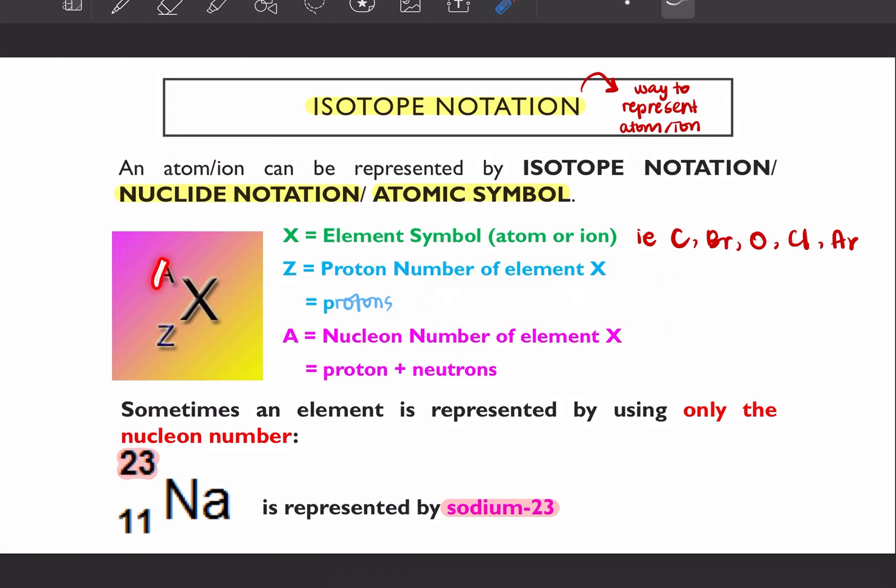Next is A. A is your nucleon number. Macam tadi yang saya cakap tu. It is the number of protons plus the number of neutrons.